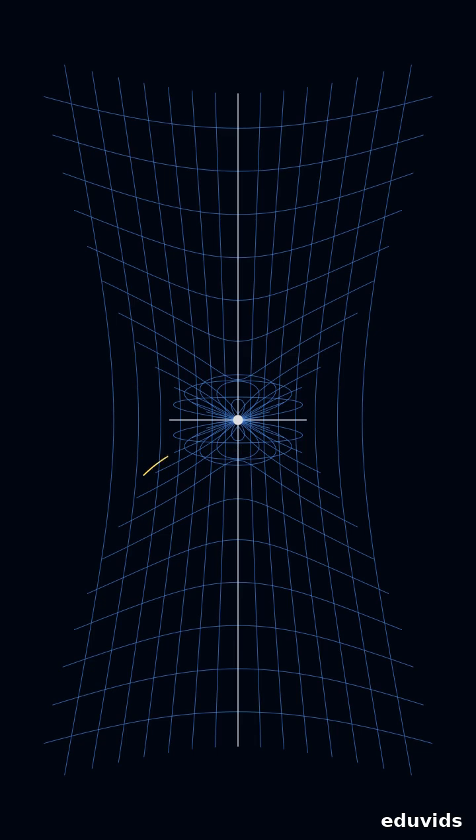That dent curves the grid so sharply that paths bend toward it. Einstein named this effect spacetime curvature. If you draw an escape ramp from the singularity, the spot where the ramp becomes vertical is the event horizon.